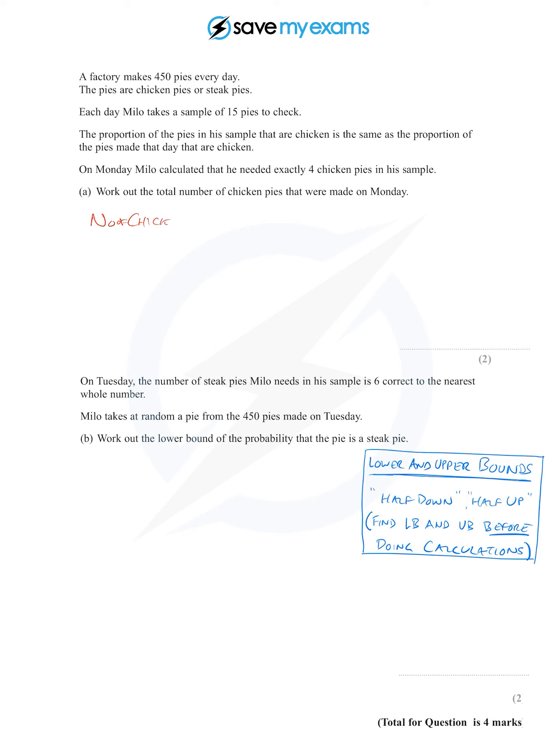The number of chicken pies is equal to - well, 4/15 of his sample are chicken pies, so 4/15 of the total are going to be chicken pies. How do we do that without a calculator?